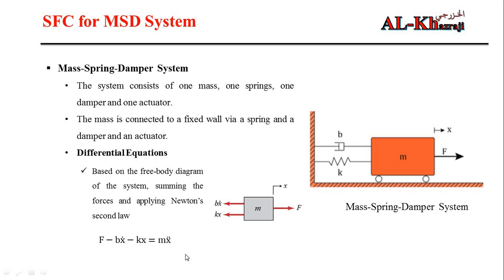To build the state space model we rearrange the equation by dividing through by m: x double-dot equals (1/m) times F minus (b/m) times x-dot minus (k/m) times x.